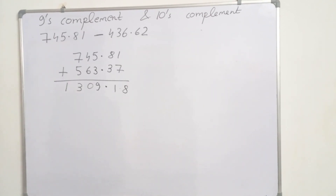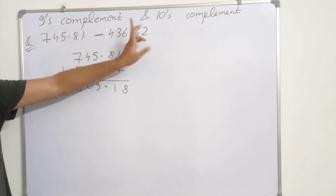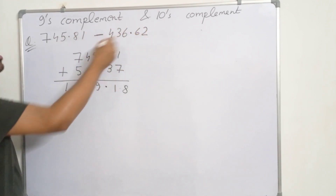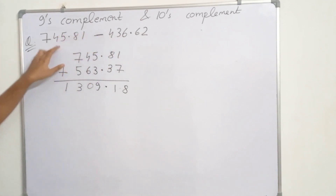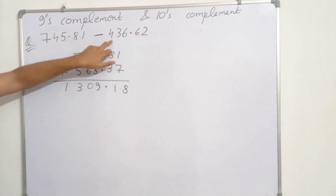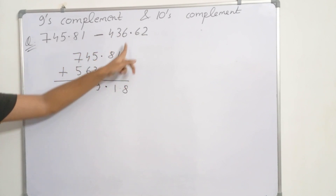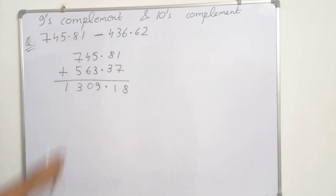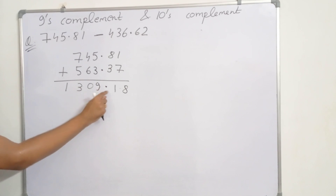Now the next question is we have to subtract 745.81 minus 436.62. We have to perform this subtraction using the 9's complement method. To do this, first we will take the 9's complement of the second number. The 9's complement of 436.62 will be 563.37. Then we add this 9's complement to the first number, and we get 1309.18.